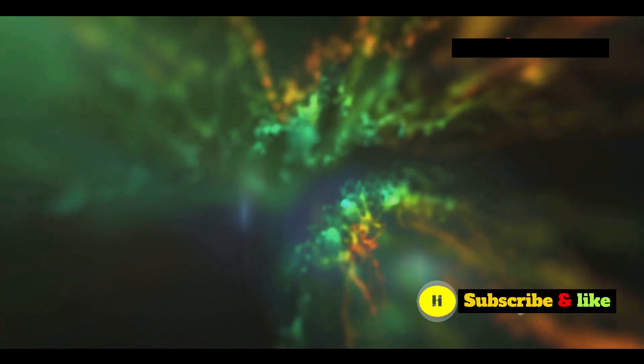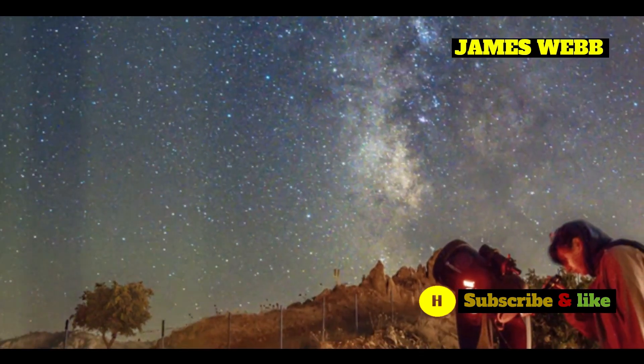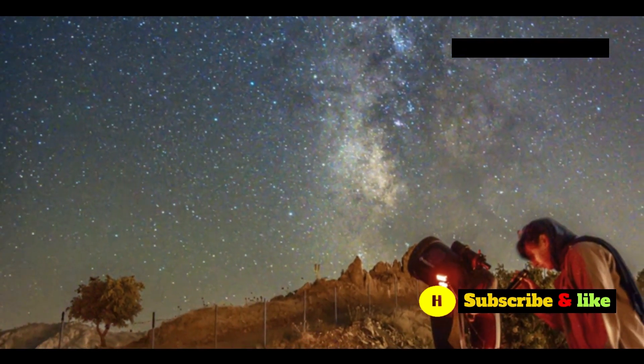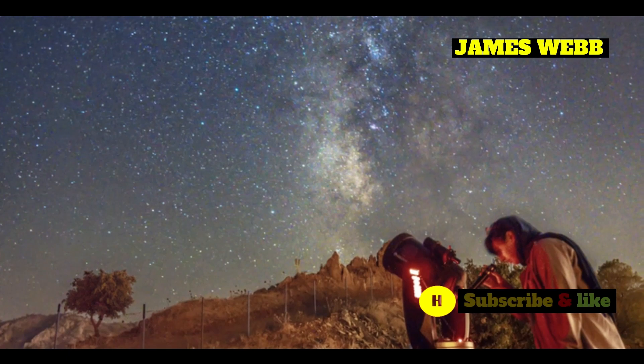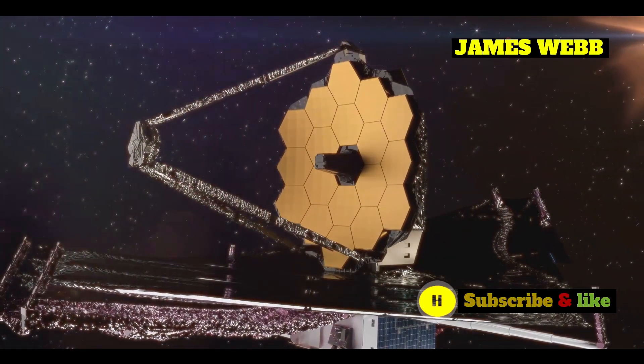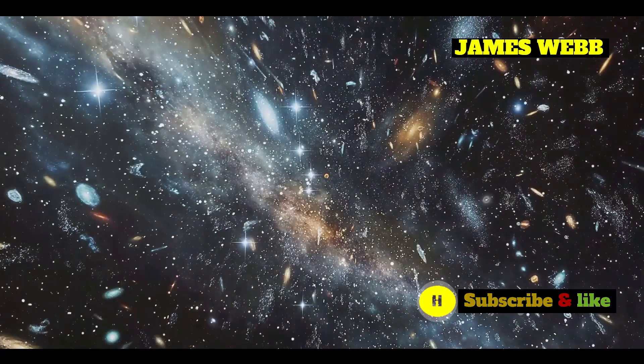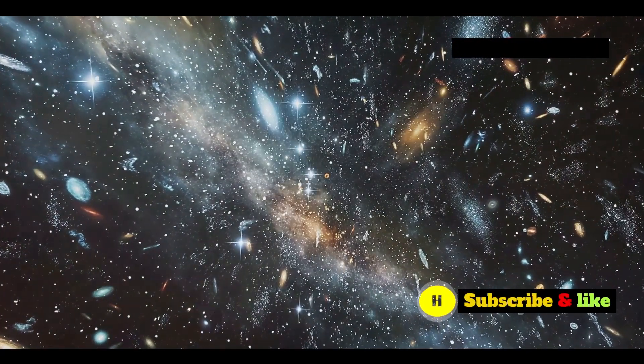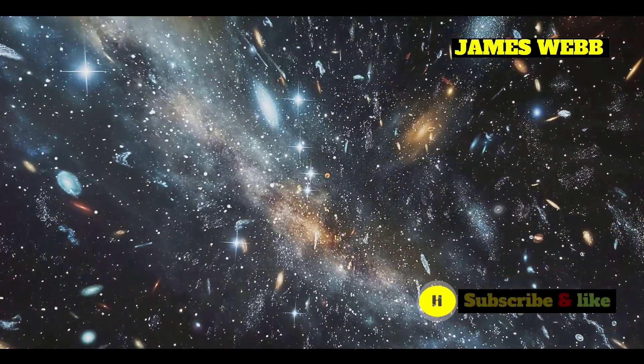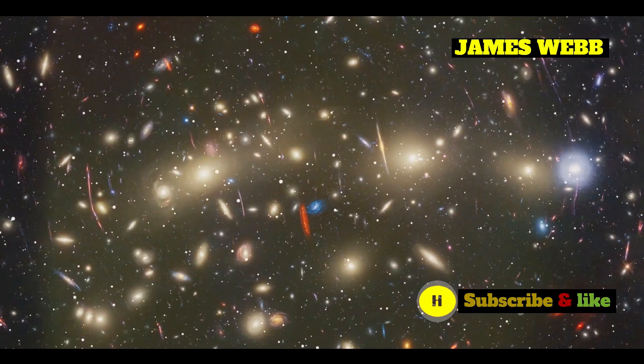The dayside of 55 Cancri E is a scorching inferno, with temperatures reaching thousands of degrees Fahrenheit. In contrast, the nightside is considerably cooler, although still incredibly hot by Earth standards. This huge temperature difference is thought to be responsible for some of the planet's most interesting features. These extreme temperature swings create a wild and dynamic environment on 55 Cancri E, shaping its atmospheric circulation patterns and influencing its overall climate.